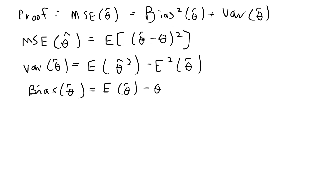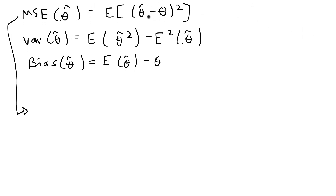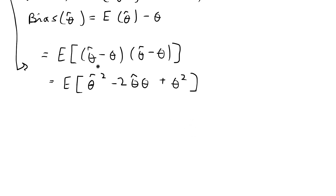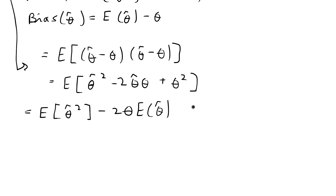Breaking down the expected value of theta hat minus theta squared — just by expanding this binomial expression — that equals the expected value of theta hat minus theta times theta hat minus theta. Distributing gives us the expected value of theta hat squared minus 2 theta hat theta plus theta squared. We can distribute the expected value to each term: expected value of theta hat squared, and since 2 and theta are constants, we pull those out, giving minus 2 theta times the expected value of theta hat plus theta squared.